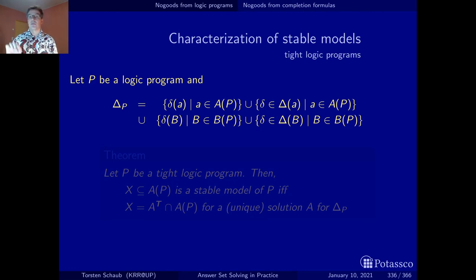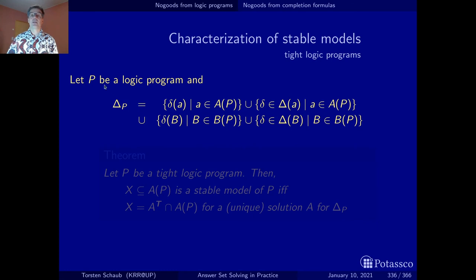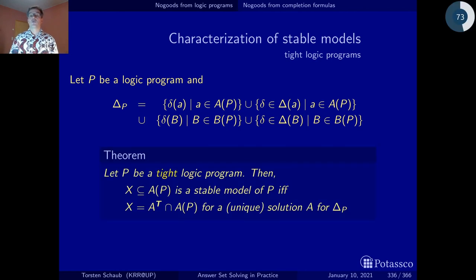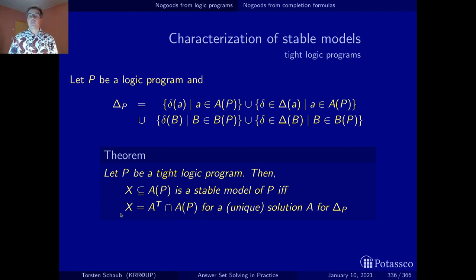In the same way here, if we put together all the types of no-goods for the atom-oriented and the body-oriented equivalences, we get the set delta-P — all the no-goods from the completion formulas. They allow us to capture tight logic programs: a set of atoms is a stable model of a logic program if and only if there is a unique solution for this set of no-goods such that the true atoms in this solution coincide exactly with X.